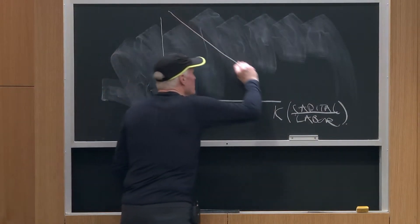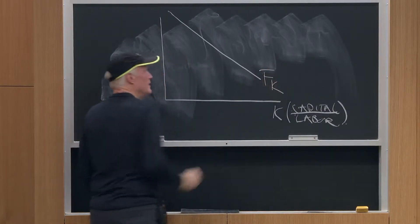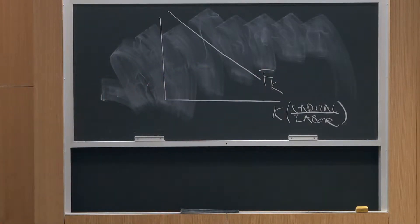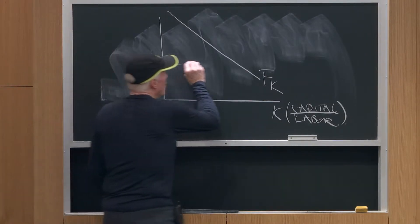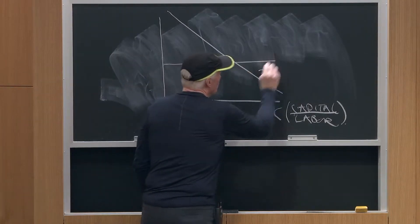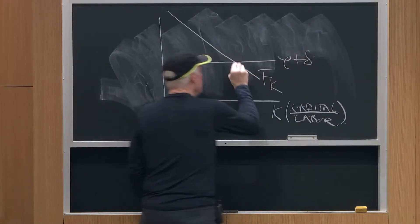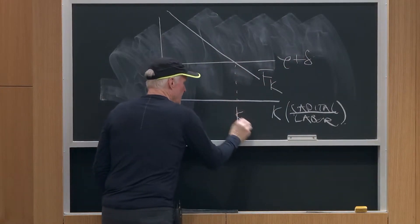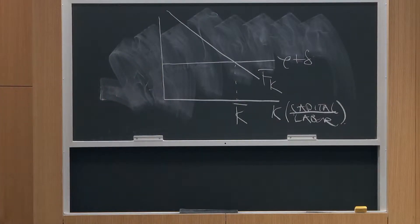You can think of the marginal product schedule, FK — that's the marginal product schedule of capital. And this says, if I draw a horizontal line at rho plus delta, this is K bar. That's my steady-state capital stock.